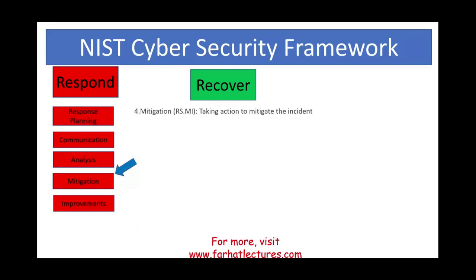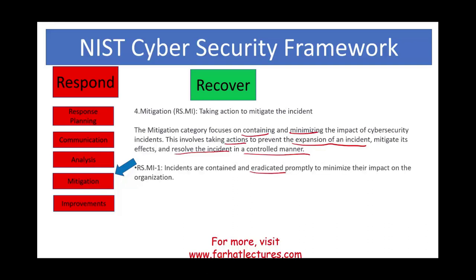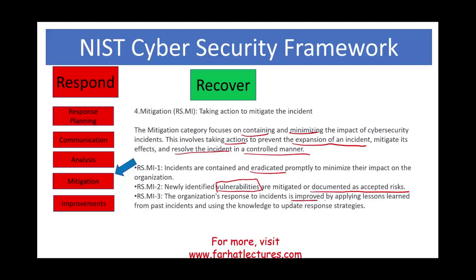The fourth category is Mitigation — what are you doing to minimize the impact of the situation? This category focuses on containing and minimizing the impact of the cybersecurity incident. It involves taking actions to prevent the expansion of an incident, limiting it, mitigating its effects, and resolving it in a controlled manner. Subcategories: incidents are contained and eradicated promptly; newly identified vulnerabilities are documented as accepted risk or mitigated; and the organization's response to incidents is improved by applying lessons learned from past incidents to update response strategies.